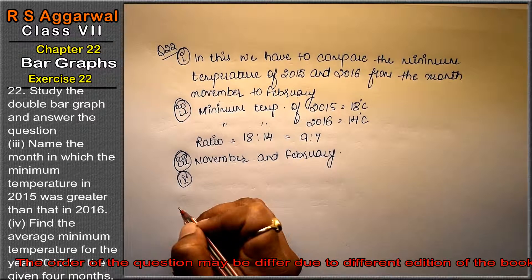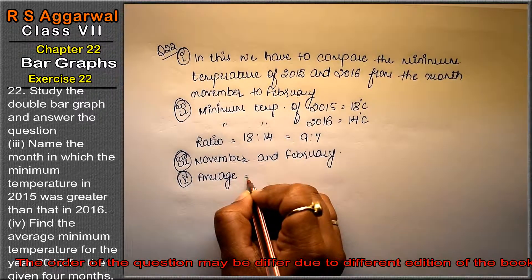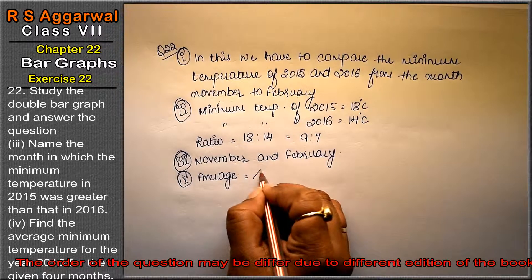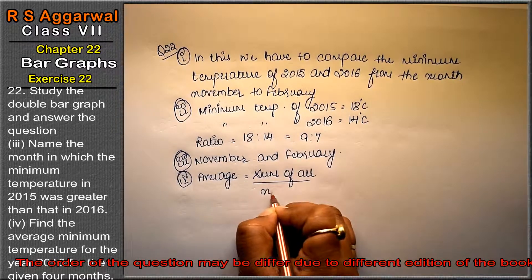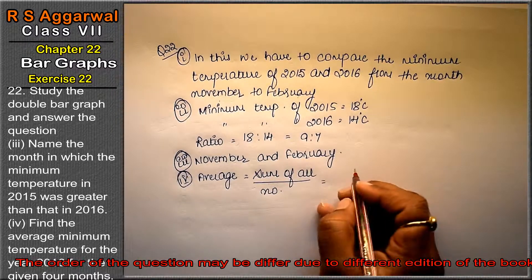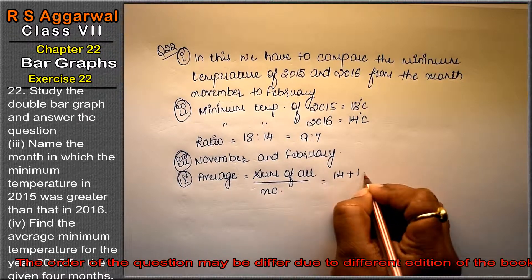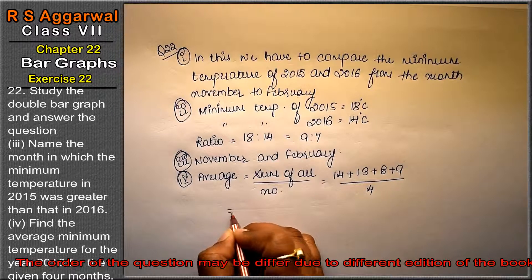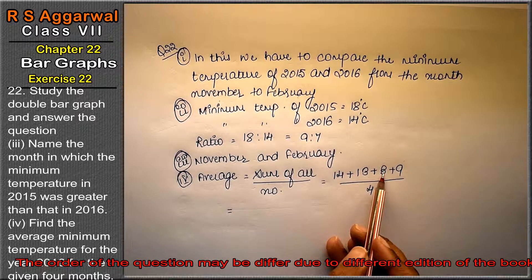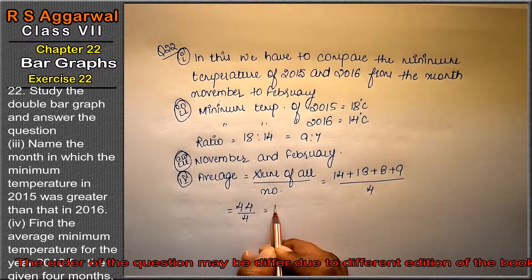Fourth part: find the average minimum temperature for the year 2016 for the given 4 months. Average = sum of all divided by number. So the sum of 2016 minimum temperatures: first is 14, then 13, then 8, and then 9, divided by 4. That gives us 44 divided by 4, which equals 11 degrees. That is the answer.